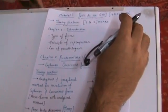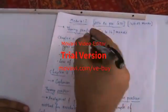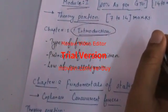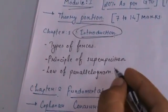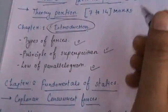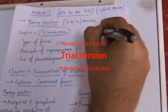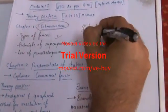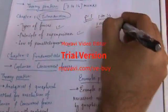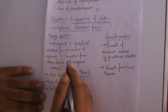First of all, in Module 1 there is an introduction which covers basic theory. In the theory portion, types of force, the principle of superposition, and the law of parallelogram are asked. As per GTU, the first question in the paper will consist of 1 to 14 one-marker questions, so you can expect one question from this part.